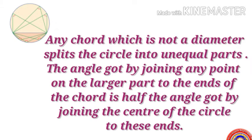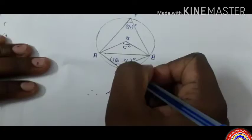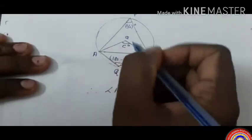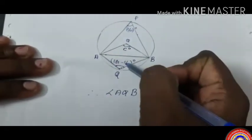Using this, we can say that any chord which is not a diameter splits the circle into unequal parts. The angle got by joining any point on the larger part to the ends of the chord is half the angle got by joining the center of the circle to these ends. Now let's look at the angles in the smaller part.